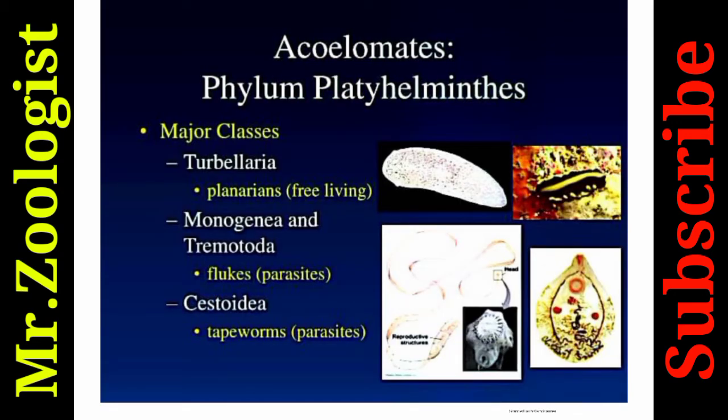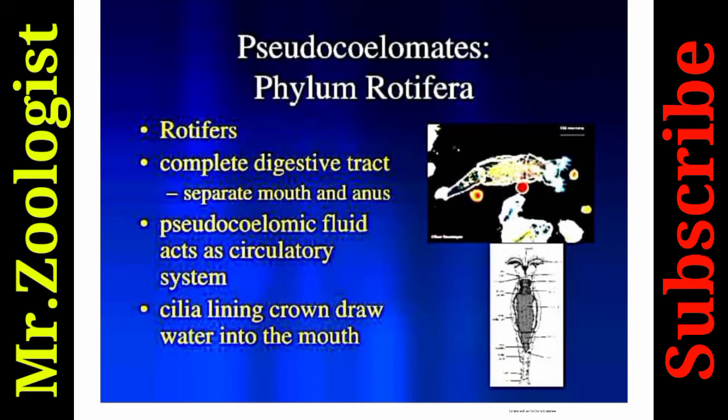Major classes of Phylum Platyhelminthes include: Turbellaria or planarians, which are free-living; Monogenea and Trematoda, which are flukes or parasites — either ectoparasites (outside the body) or endoparasites (inside the body); and Cestoda, which includes tapeworms that are parasites found inside the intestines.